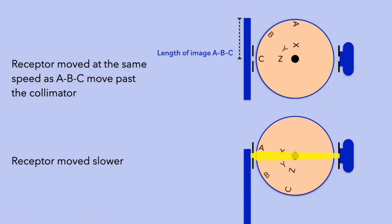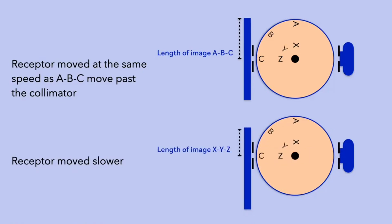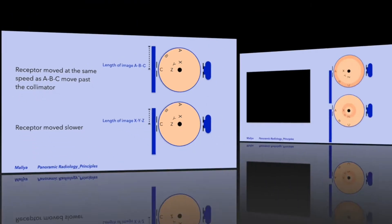Next, let's modulate the system and reduce the receptor speed. Note that the length of the registered image is shorter and in this case will more accurately represent the horizontal dimensions of structures X, Y, and Z. Images of structures A, B, and C are also recorded on this shorter length and thus are horizontally distorted and unsharp.